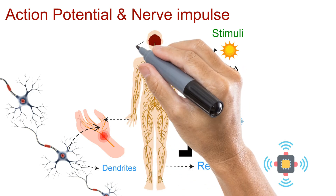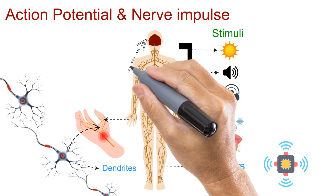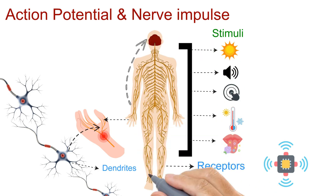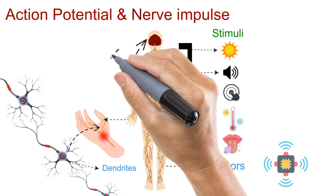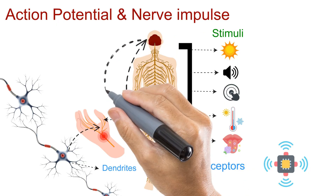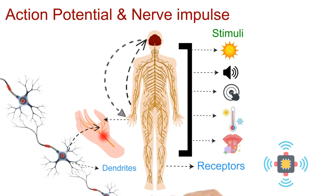These nerves transmit the signals all the way to the brain, where the information is interpreted, and a suitable message is sent back to the target organ, telling your body how to respond.